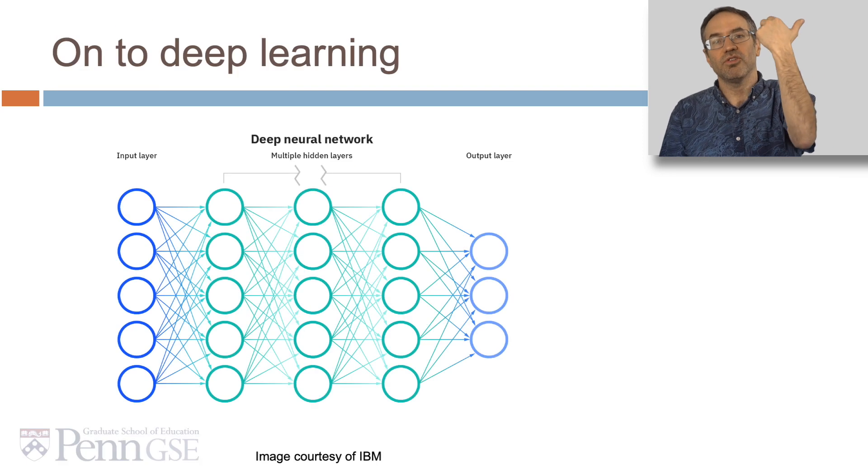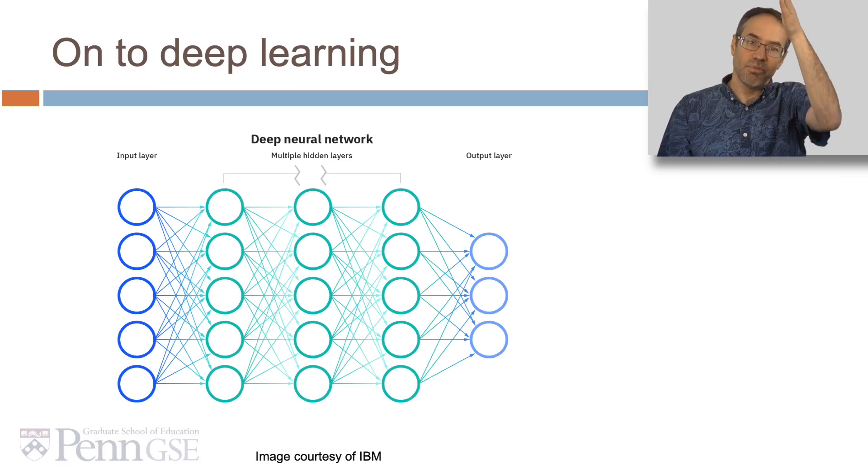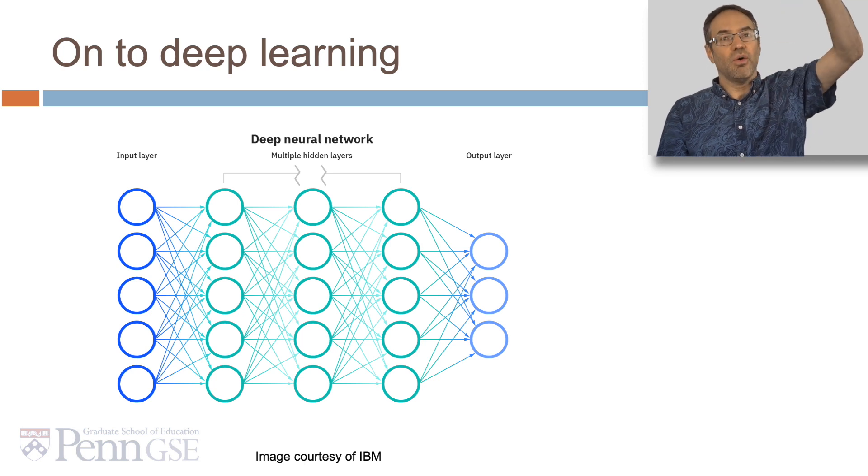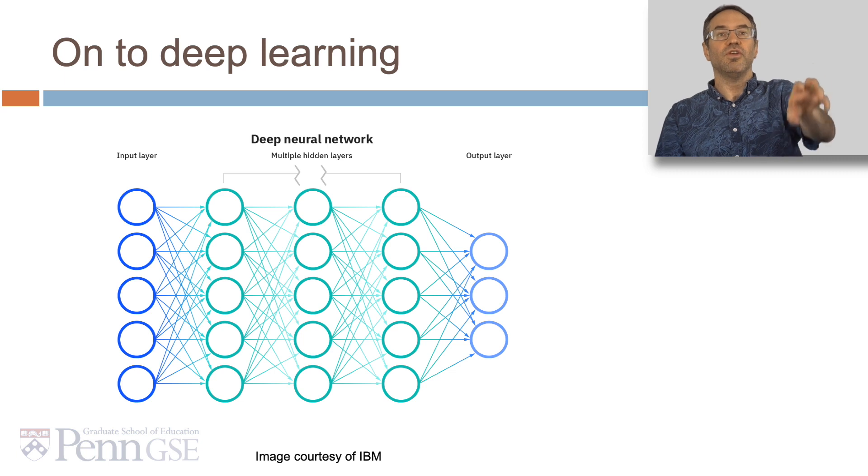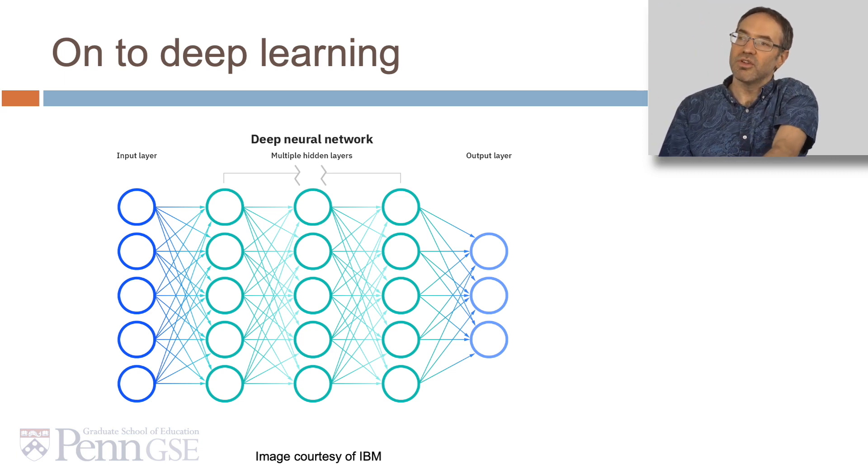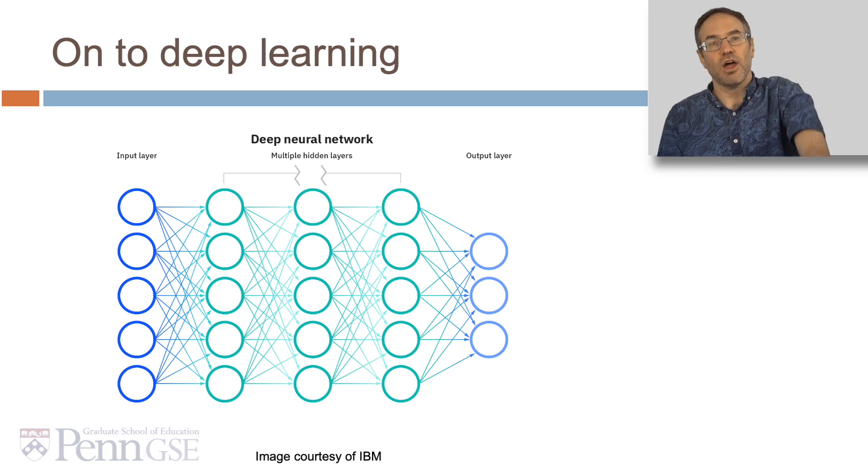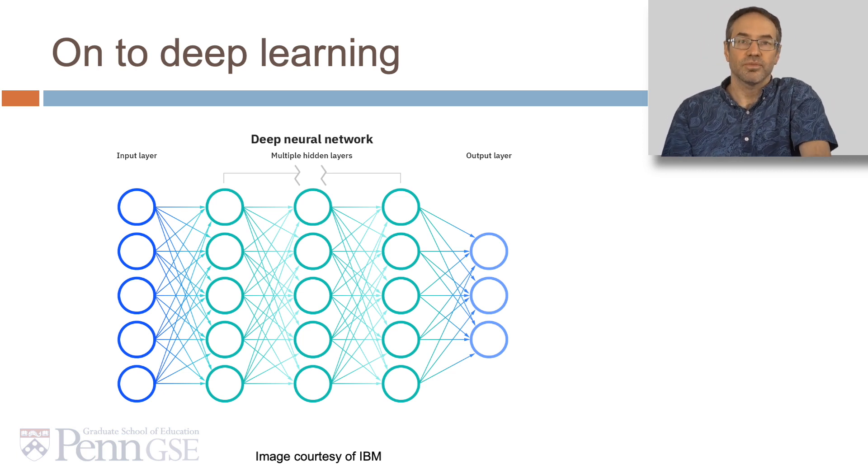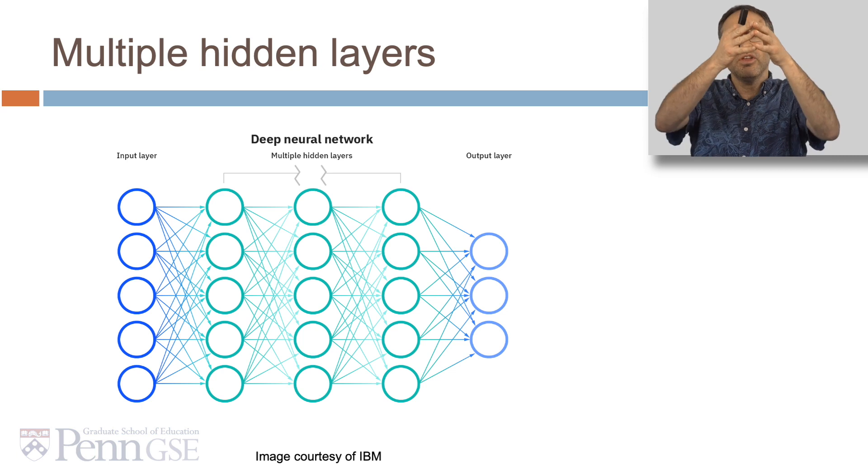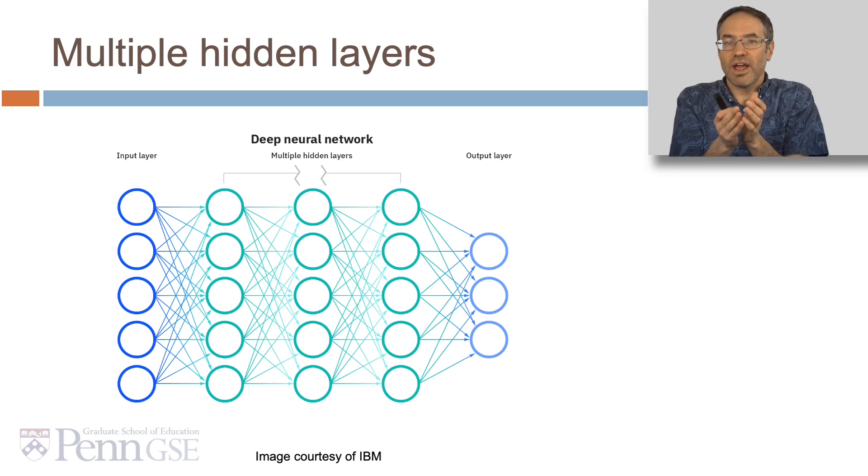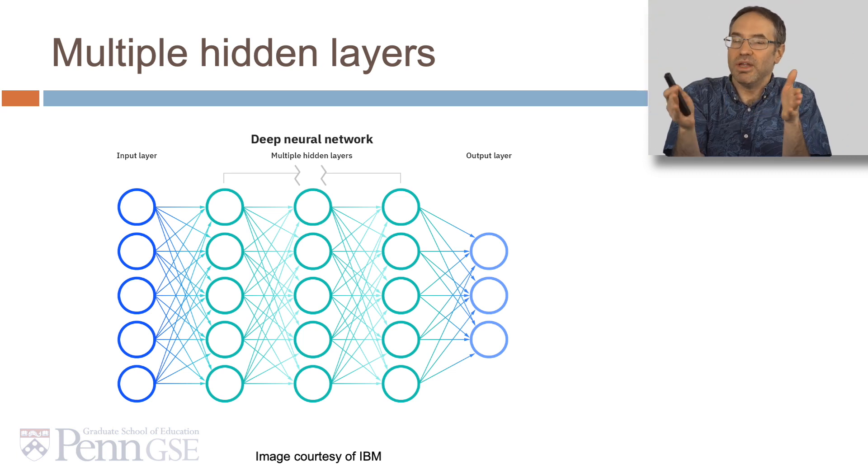But then we can move on to deep learning. In deep learning, we have multiple layers of perceptrons that feed into each other. So the inputs feed into the first layer of perceptrons, which feed into the second layer of perceptrons, which feed into the third layer of perceptrons, and so on and so forth until we finally output the predictions. We call these hidden layers because we never actually see them directly. We see the inputs, we see the outputs.